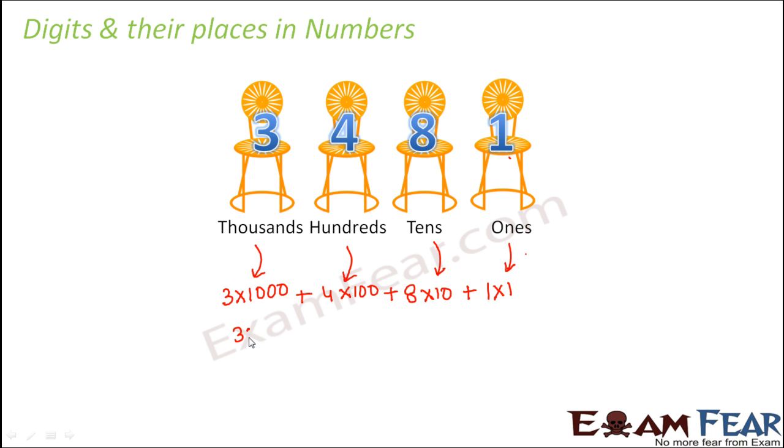So let us add them all. So 3 into 1000 is 3000, 4 into 100 is 400, 8 into 10 is 80 and 1 into 1 is 1. So the value of the digit is 3481. So that means if you write 3481, if you say that I have 3481 rupees, that means you have 3481 rupees.